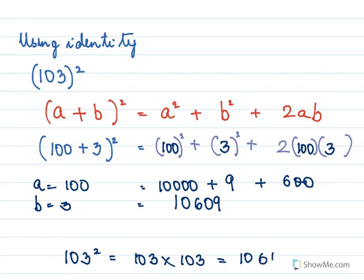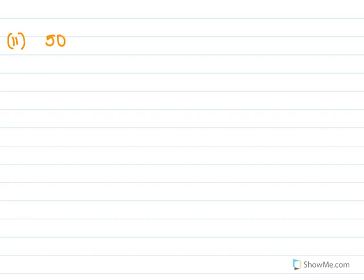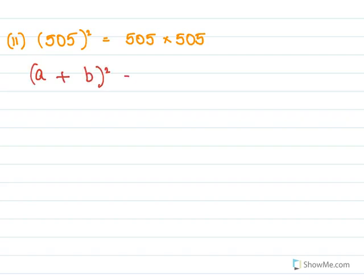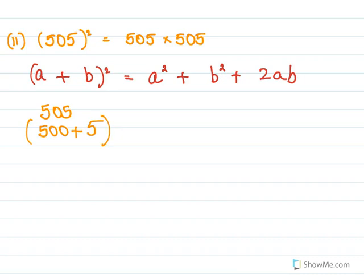In the second sum, we will find the square of 105, which means we need to find 105 × 105. Again we use the formula (a + b)² = a² + b² + 2ab. So 105 will be broken up into (100 + 5)², where 100 is a and 5 is our b.